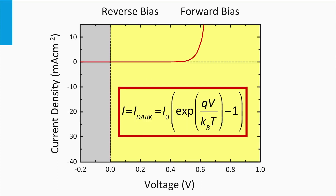This IV curve can be described by a relatively simple expression showing that the relation between current and voltage is an exponential function. I stands for the current at a given voltage V, Q is the elementary charge of the electron, k_B is the Boltzmann constant, and T is the temperature of the P-N diode. I0 is the extremely small current in the block direction under reverse bias conditions.